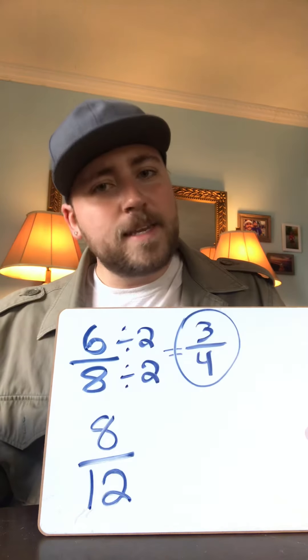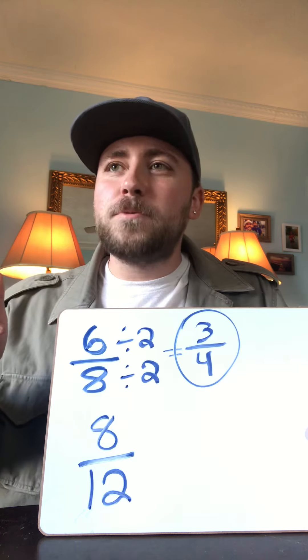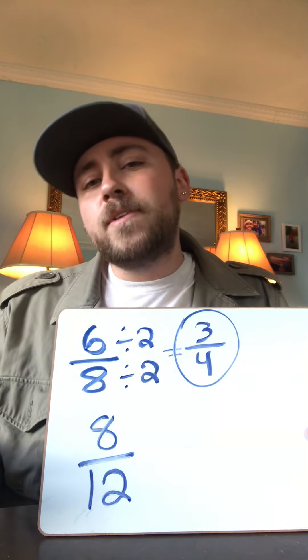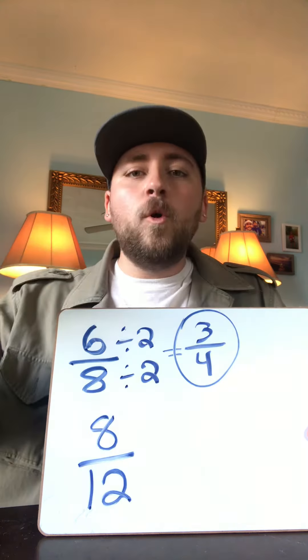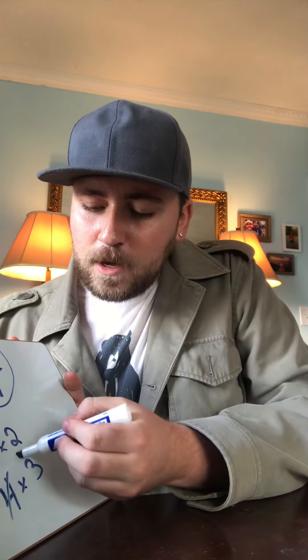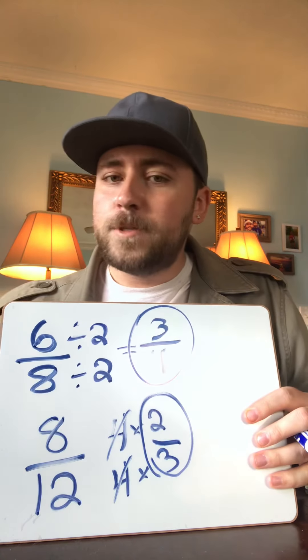Let's look at one more: eight-twelfths. Eight and twelve are both even, so two goes into them, but because I'm in fifth grade I know my multiplication facts, and I know that more than just two is going to go into them. Eight and twelve both have four in common. So I've got four times two on top, and four times three on the bottom. My fours are the same, so I'm going to cancel them out, which leaves me with two-thirds. Two-thirds is my answer.